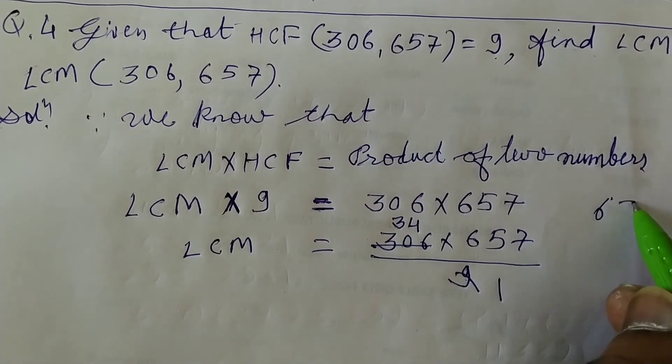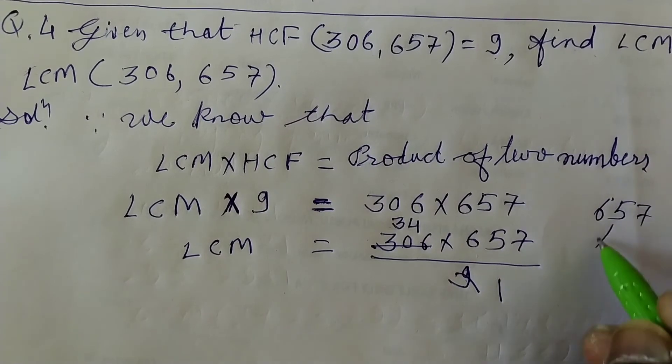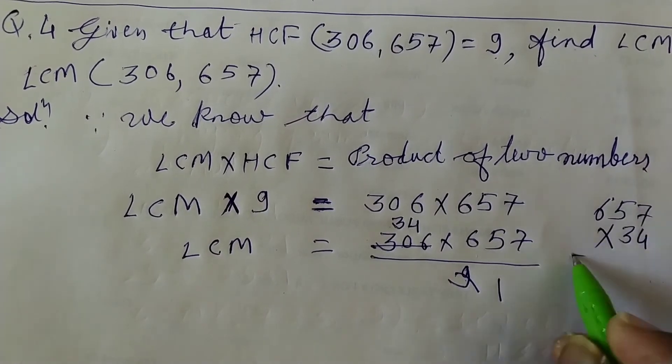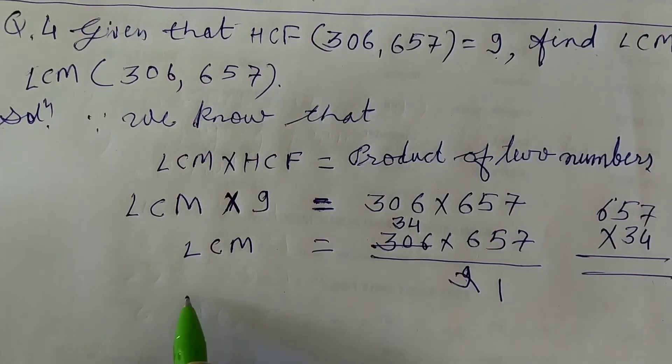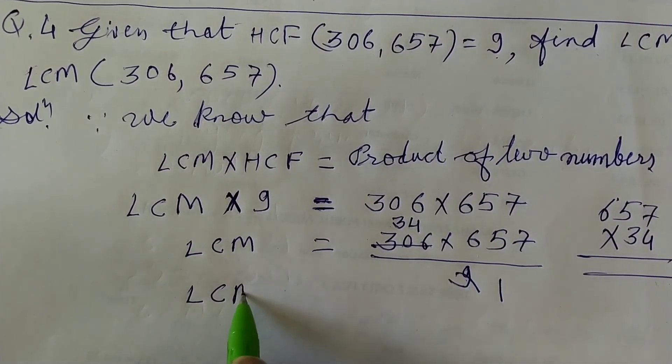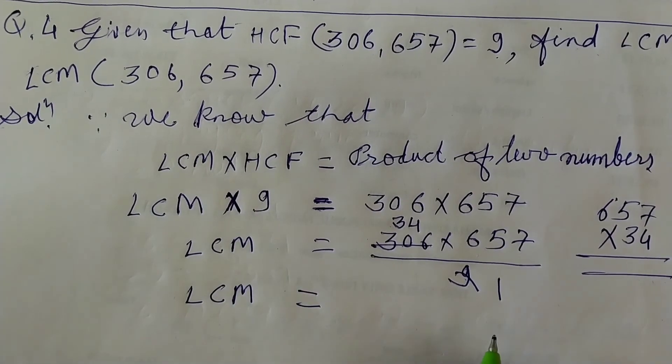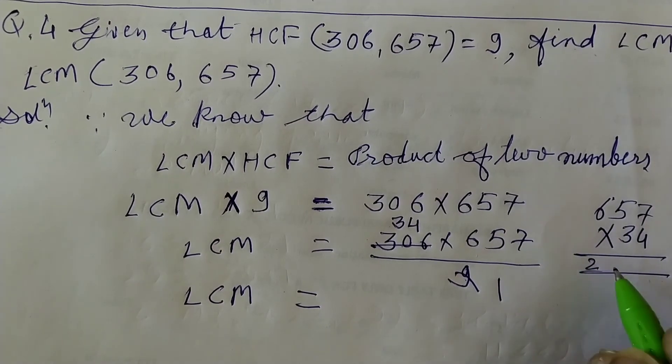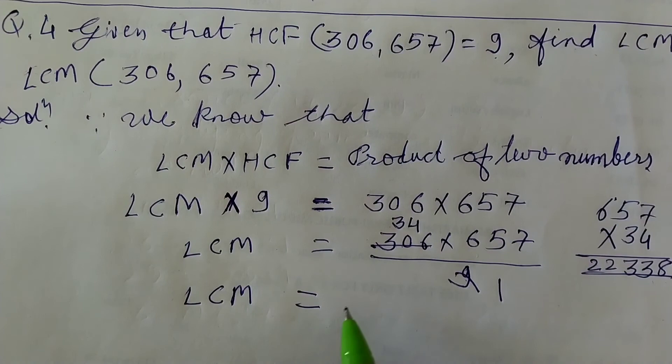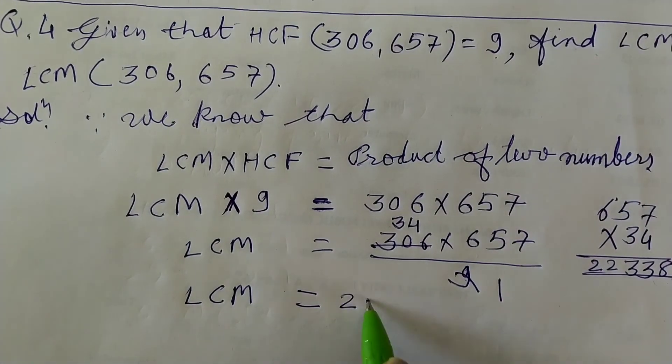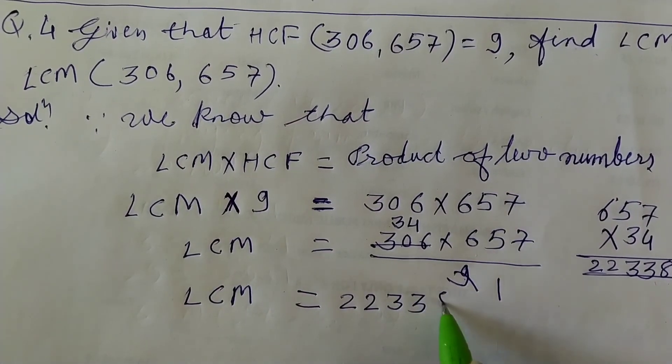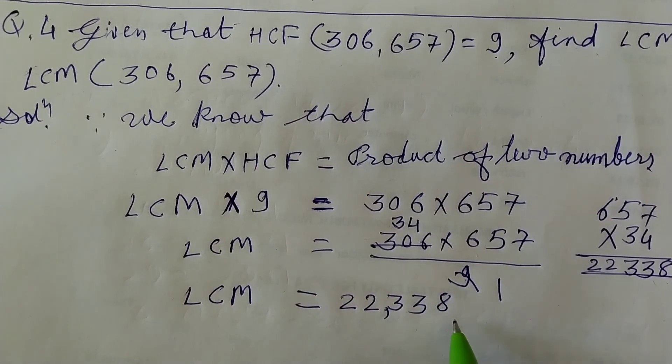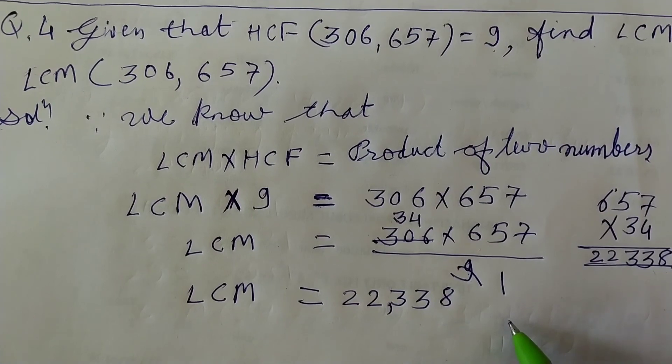We will multiply 657 by 34. You know very well how to multiply you have studied in previous classes. I will write here finally, 22,338. I am writing here double 2 double 3 8, 22,338 is the LCM. This is our required answer.